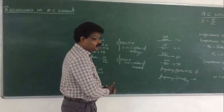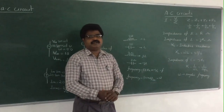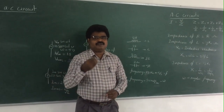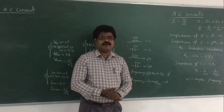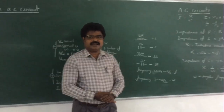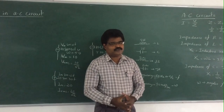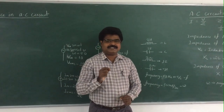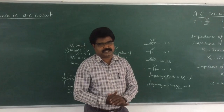Circuit theory involves 5 components: 2 active components and 3 passive components. The active components are current source and voltage source. The passive components are resistance, inductance, and capacitance.